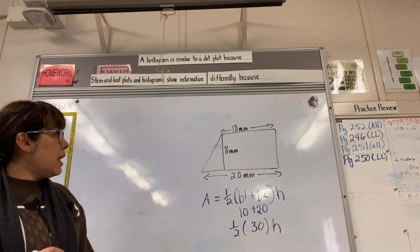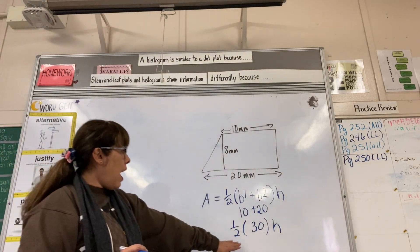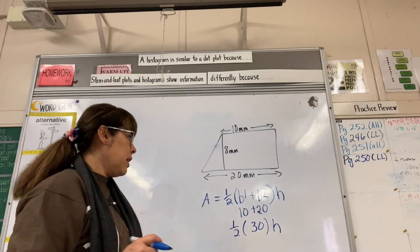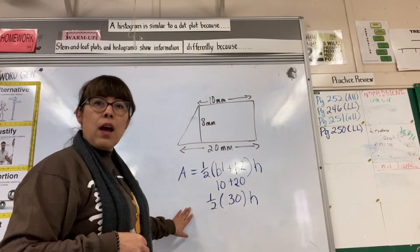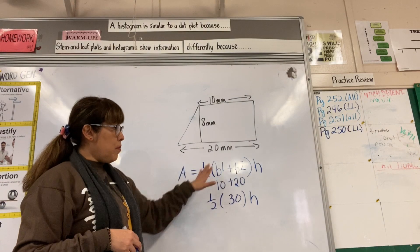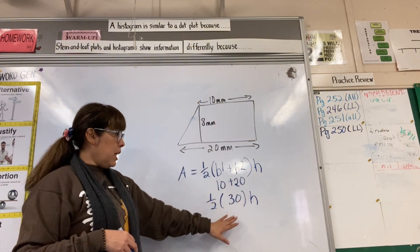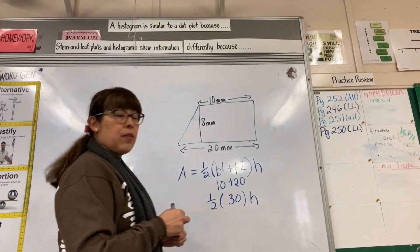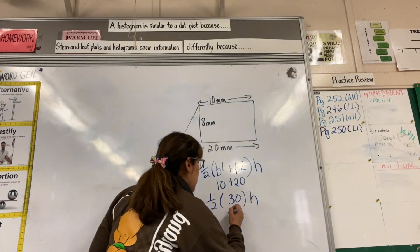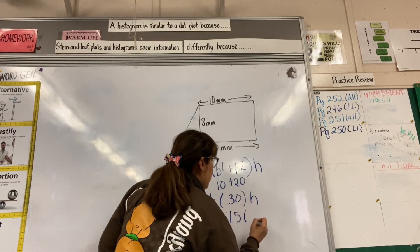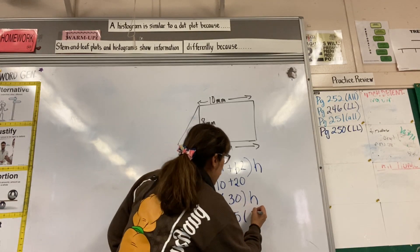We know the height is 8. Half of 30... We left off on adding our base 1 plus base 2: 10 plus 20 equals 30, and we said half of 30 was 15. And we're going to multiply it with the height.